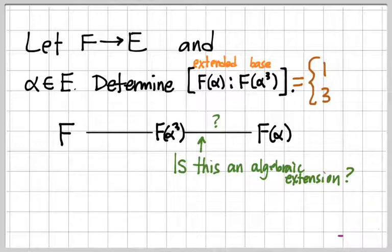So leaving the finite part to the side for a moment, how do we know that this is an algebraic extension? So alpha's in E, which means in particular f adjoin alpha, if we add one more step to our tower here, is going to be a subfield of E.